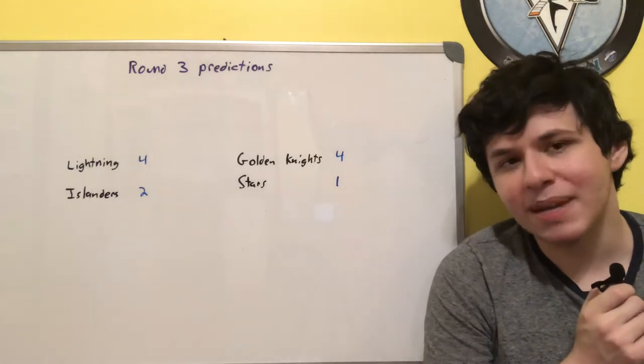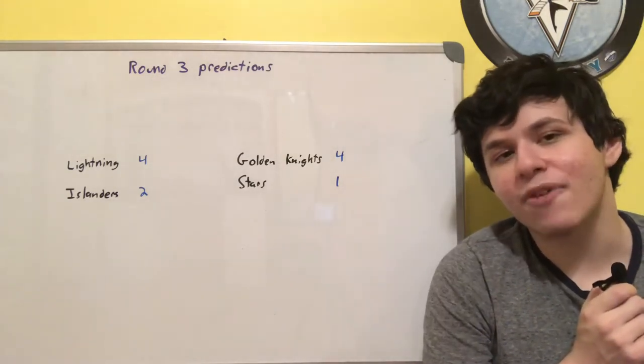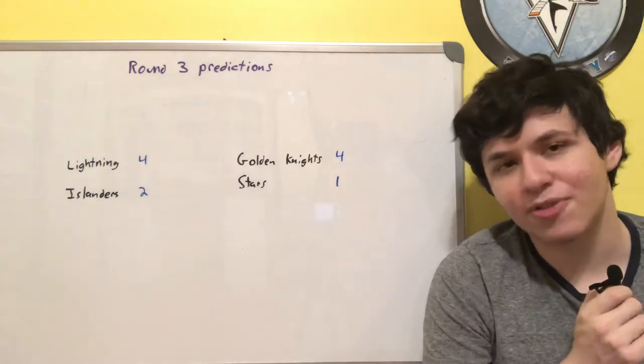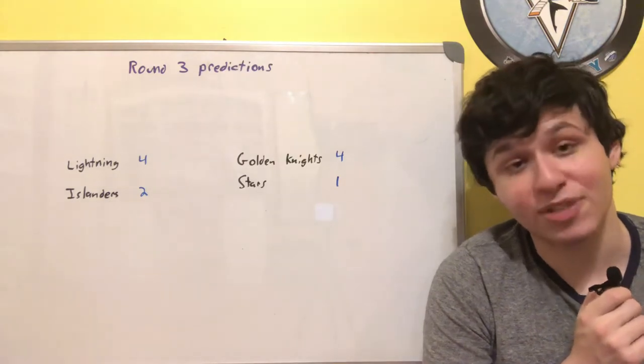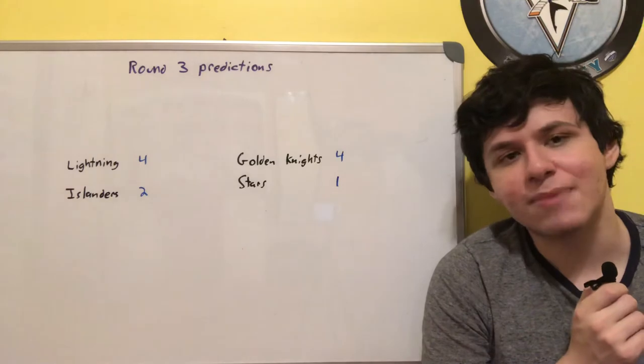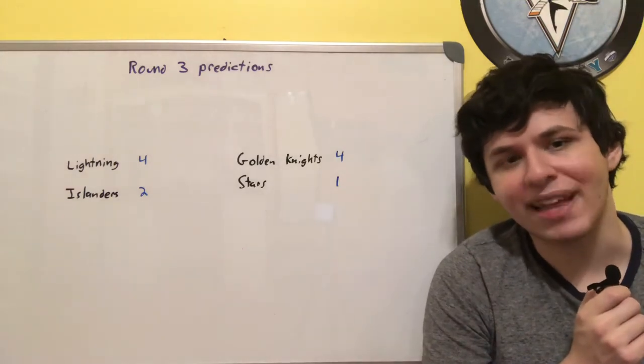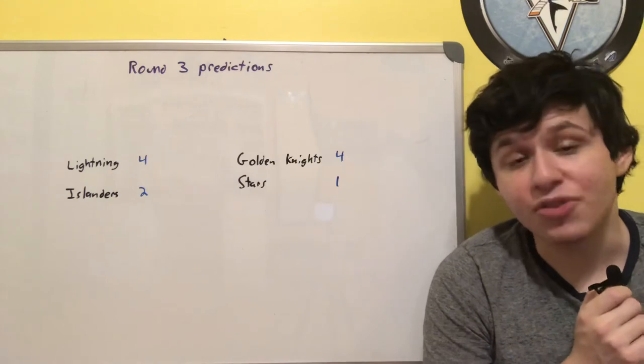The reason I have the Lightning beating out the Islanders is mostly because the Lightning have already dealt with a team that's quite similar to the Islanders and that is the Columbus Blue Jackets in the first round. Both of these teams, the Blue Jackets and the Islanders, are very heavily defensive-focused. They're a team that comes together to play well as a unit more than the sum of their parts. They have strong goaltending both sides.